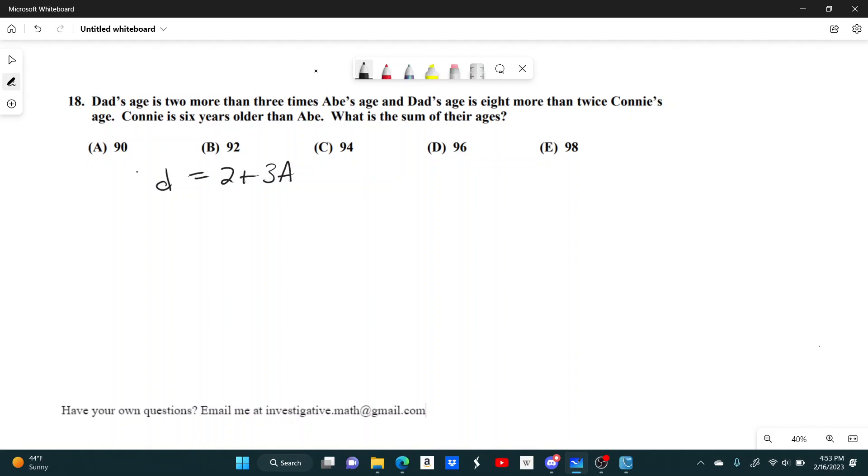And we also have dad's age is eight more than twice Connie's age, so D equals 8 plus 2C. And then finally we have Connie is six years older than Abe. So if you take Abe's age and add six, we'll get to Connie's age, so A plus 6 equals C.